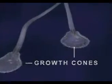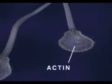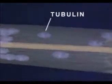Two principal proteins involved in growth cone function are actin, which is responsible for the pulsating motion seen here, and tubulin, a major structural component of the neurite membrane. During normal cell growth, tubulin molecules link together end-to-end to form microtubules, which surround neurofibrils, another structural protein component of the neuronal axon.